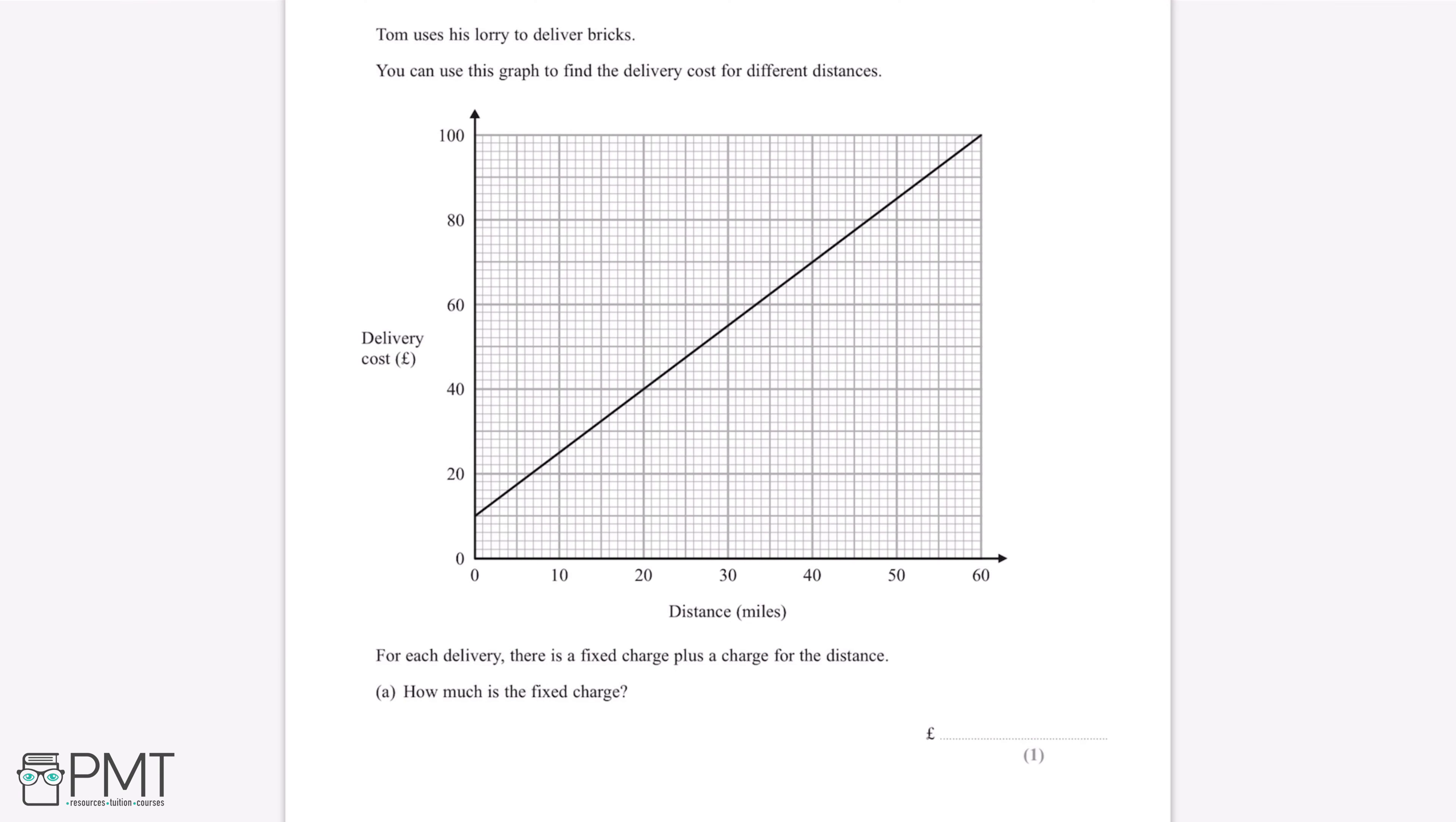Tom uses his lorry to deliver bricks. You can use this graph to find the delivery cost for different distances. For each delivery, there's a fixed charge plus a charge for the distance. How much is the fixed charge?